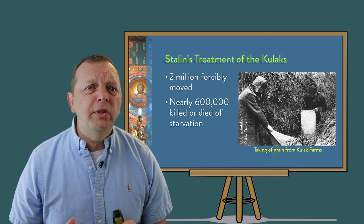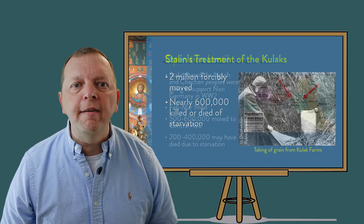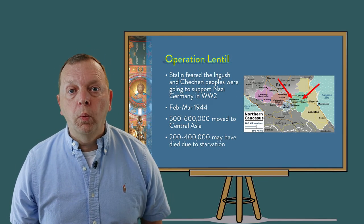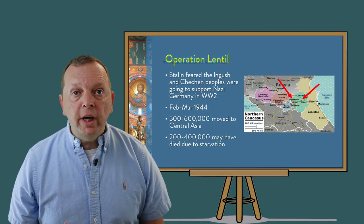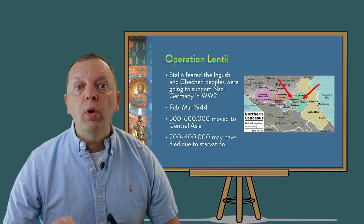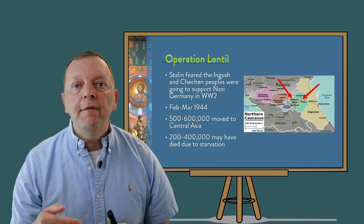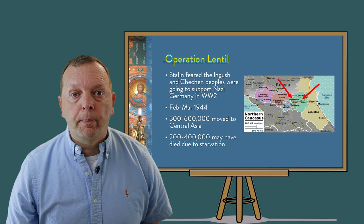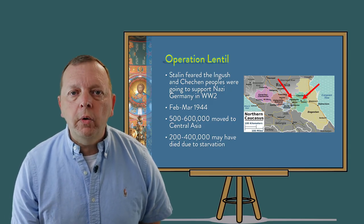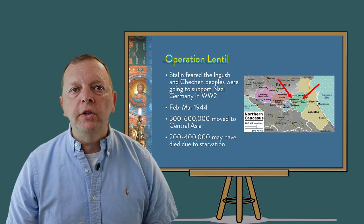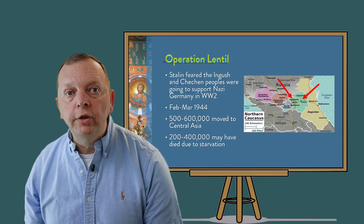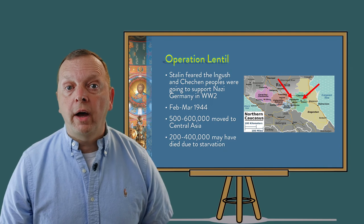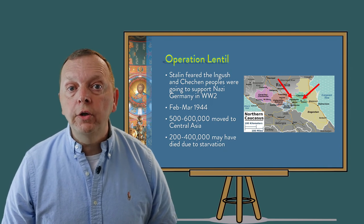One Soviet historian estimates that the number who died may have been as many as five million people. Stalin also used resettlement during World War II. Fearing that the Chechen and Ingush populations — the people who live on the Russian side of the Caucasus Mountains — would side with Nazi Germany, Stalin called for Operation Lentil. Between February and March 1944, between 500,000 and 600,000 Ingush and Chechens were deported to Central Asia. Another 200,000 to 400,000 may have died due to starvation during this period.